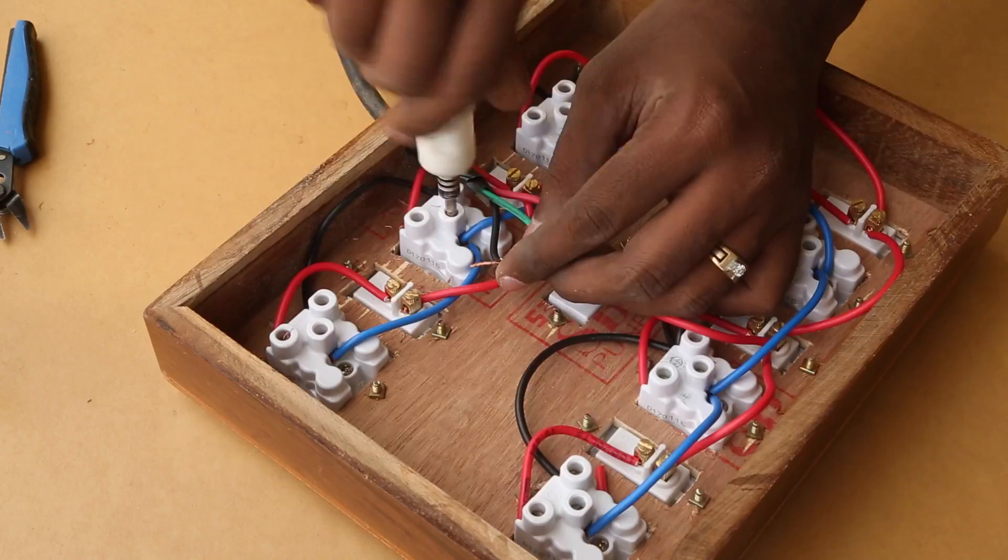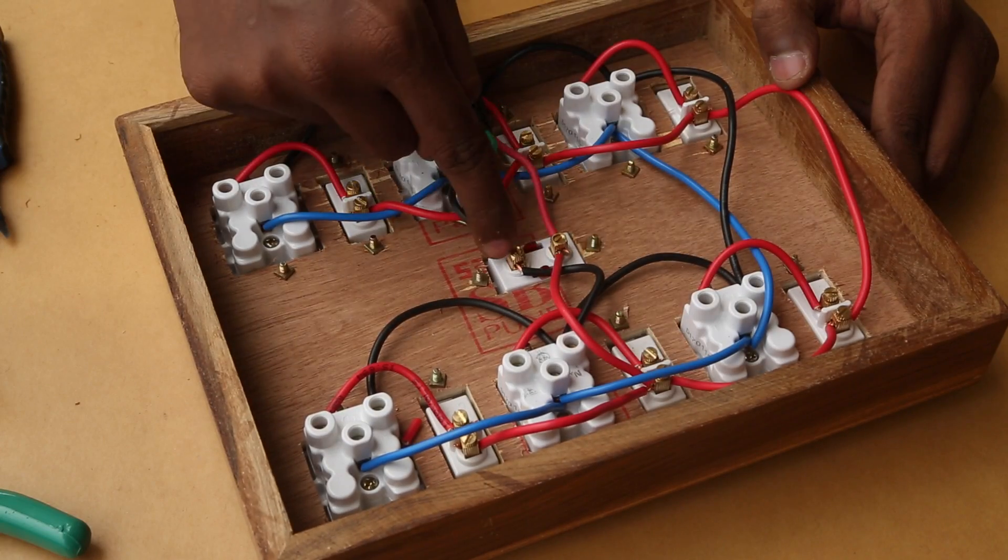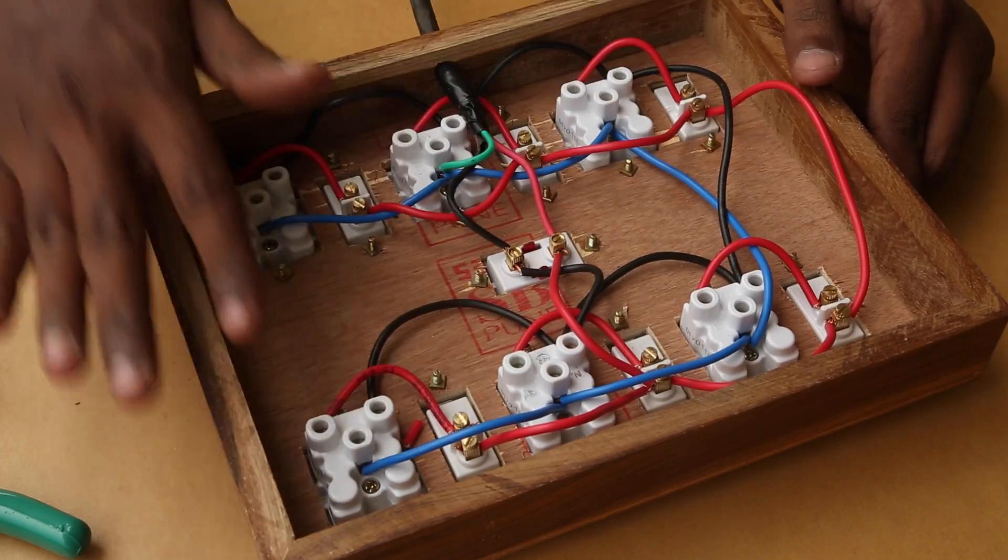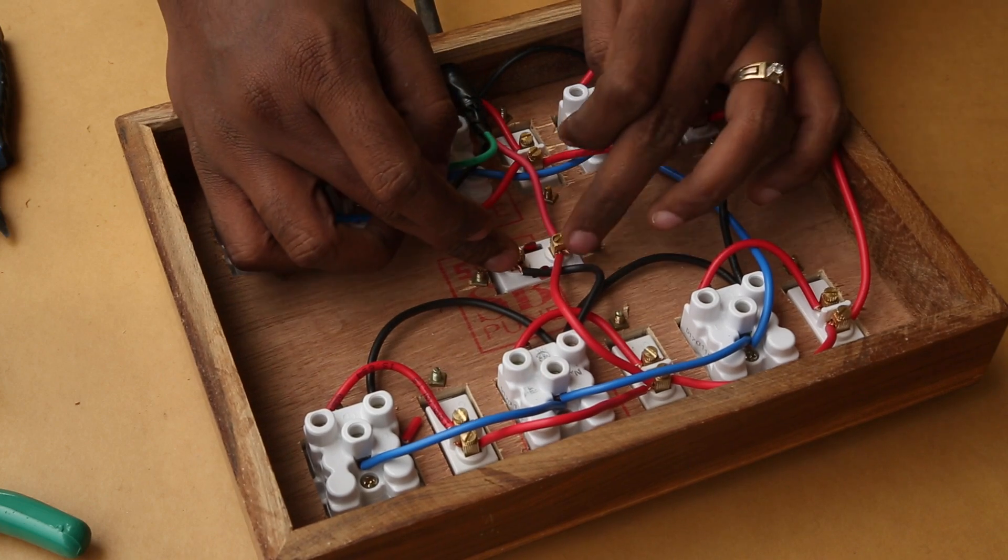For the earth wire, I just bend it and connect it to the nearest terminal. With that, all the connections are done. Because the indicator is the first point of contact from the extension cable, we will always know if we are receiving power or not when the indicator glows.